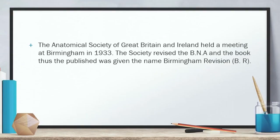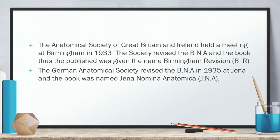The Anatomical Society of Great Britain and Ireland held a meeting at Birmingham in 1933. The society revised the BNA and the book thus published was given the name Birmingham Revision, known as B.R.